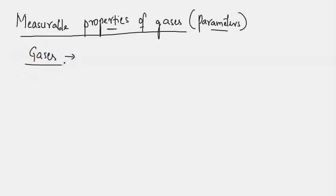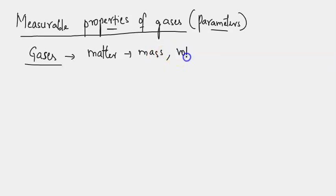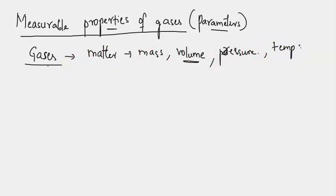Gases are one of the states of matter with low intermolecular forces and large spaces between particles. Since gases are matter, they have mass. Their particles have some mass, and they occupy a lot of space. The intermolecular forces are low, so they scatter freely and occupy as much volume as available. Gas particles hit the walls of the container and each other, exerting pressure. Gases also possess temperature because as particles move and collide, their kinetic energy increases.